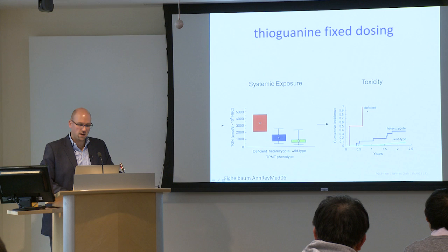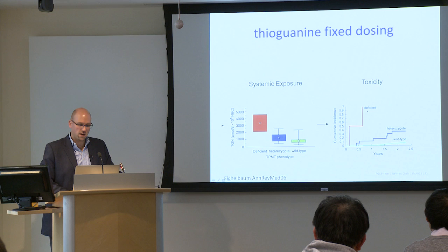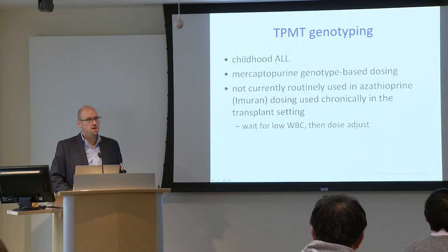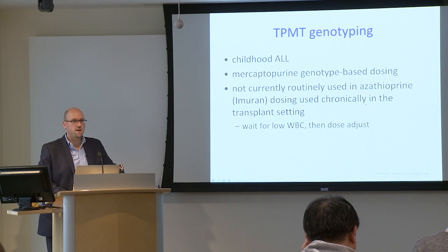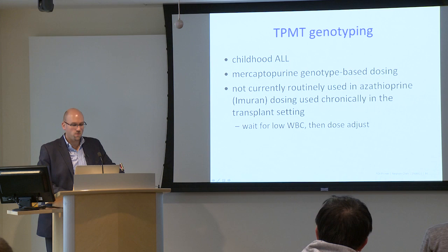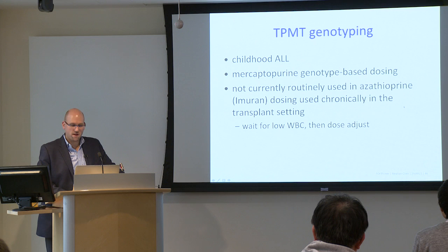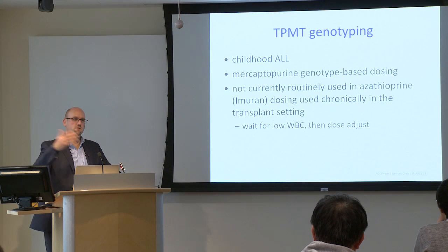TPMT genotyping is now established for oncologic agents targeting these pathways — for example, childhood acute leukemia treated with mercaptopurine type therapies includes genotype-based dosing. This is not currently routinely used in azathioprine, although it is chronically used in the transplant setting. In that setting we watch for low white blood cell count and dose-adjust rather than use genotype-based targeting, partly because we're giving much more modest doses for chronic immune suppression compared to treating acute leukemia.